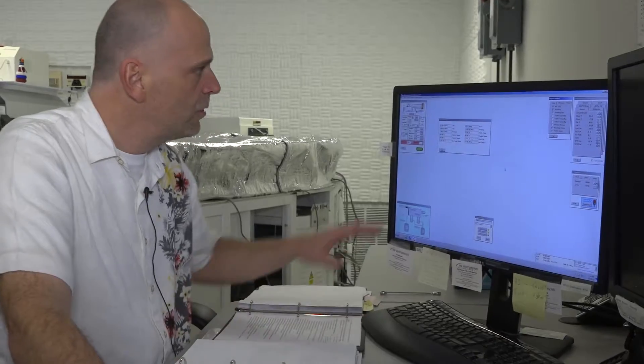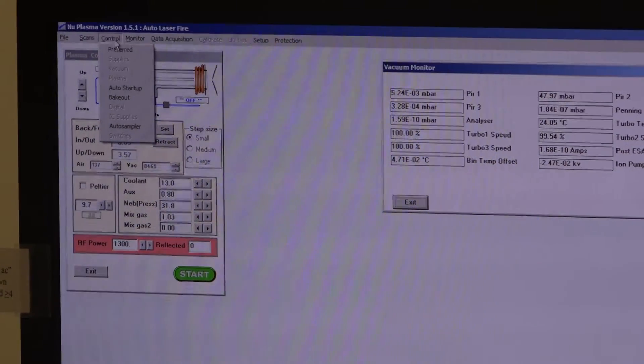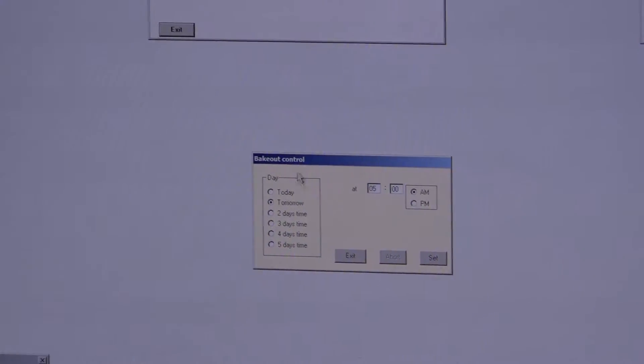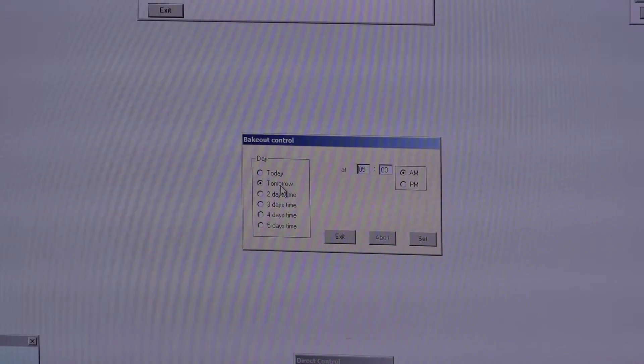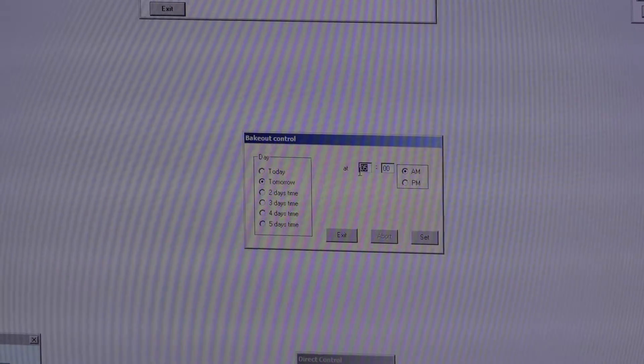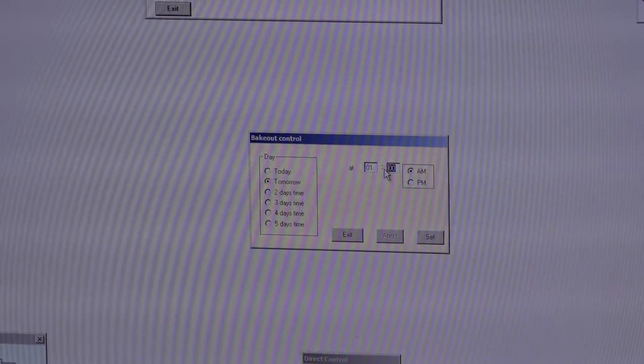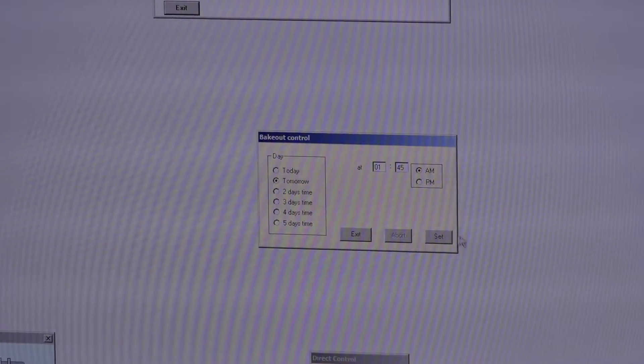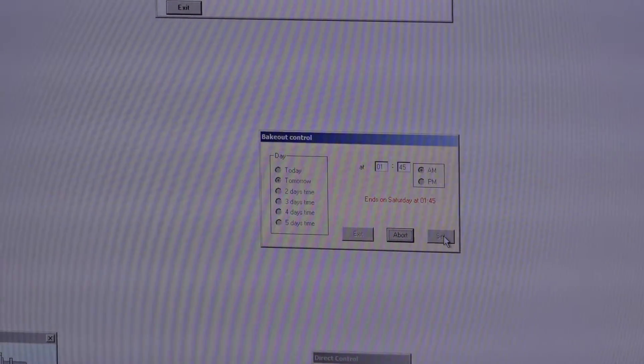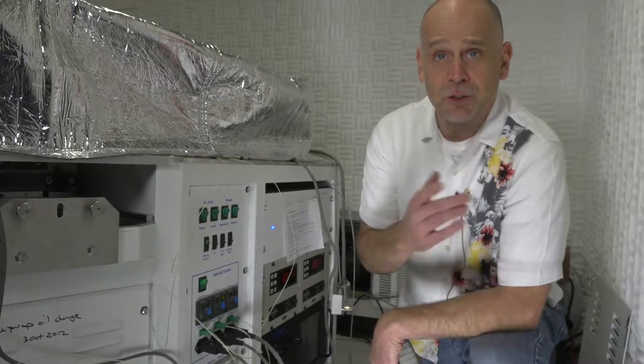Time to bake it up. So now we're ready to start the bake-out process. On the top ribbon, under control, it gives you a drop-down menu. Click bake-out. And the bake-out control window opens. And you're going to want to set the bake-out for 12 hours. So tomorrow, and you set the time 12 hours from now. And say set. And it tells you when the bake-out is going to end. And I'll see you tomorrow. Now that the bake-out procedure has been started via the software, you're going to want to go to the back panel of the instrument.